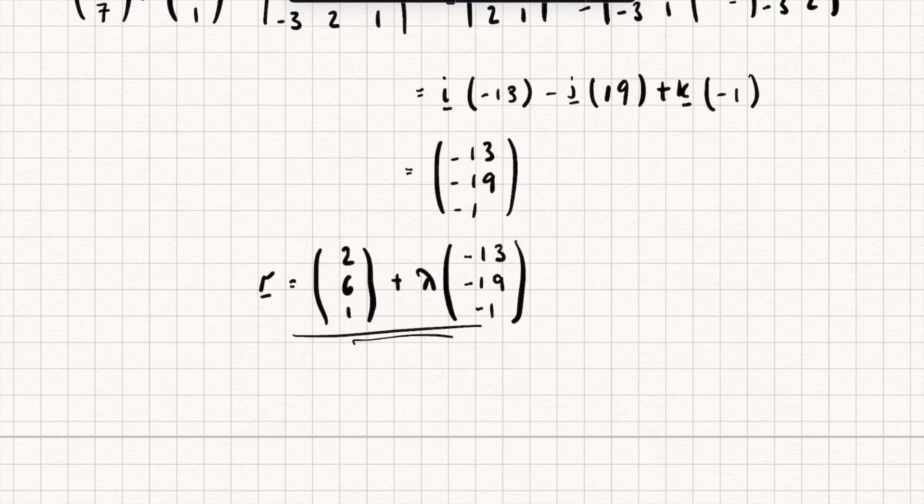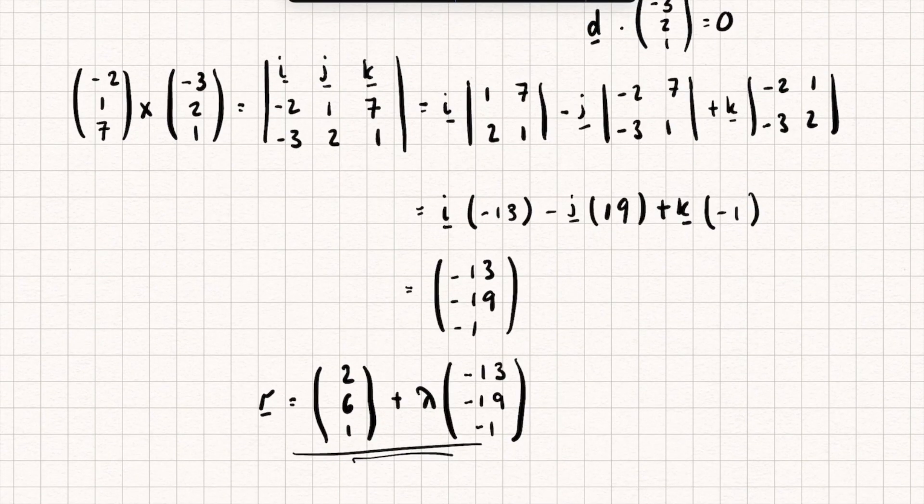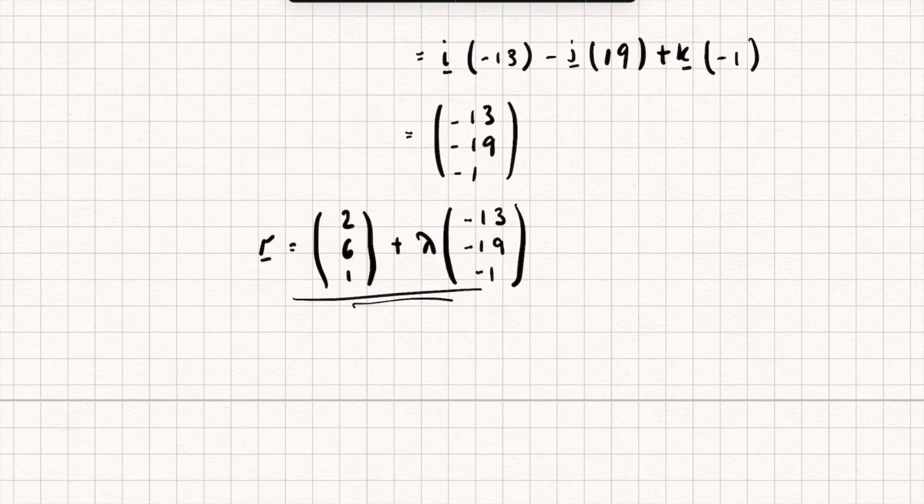And if you want to check it as well, you could just calculate the dot product of this new direction vector we found with the original two vectors and check that it equals 0. So hopefully this was useful. If it was, please do like and subscribe and go over to my channel where I have tons of other maths tutorials. Thanks for watching.